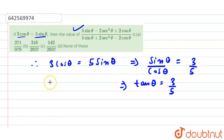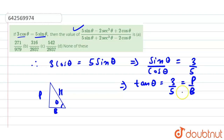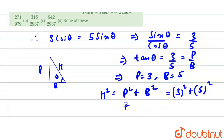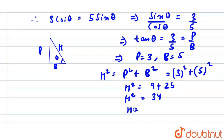If we make a right triangle: this side is p (perpendicular), this is b (base), and this is h (hypotenuse). Since tanθ = p/b, we have p = 3 and b = 5. We can now find h: h² = 3² + 5² = 9 + 25 = 34, so h = √34.